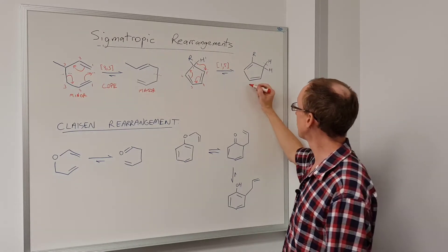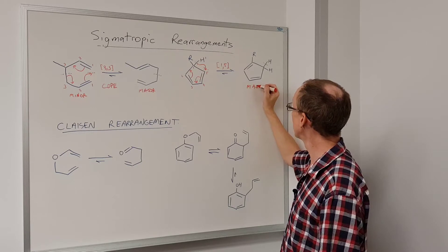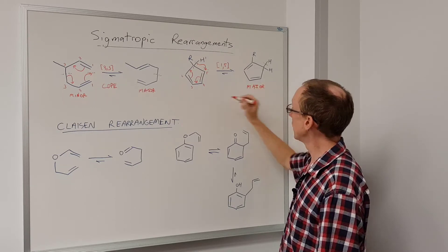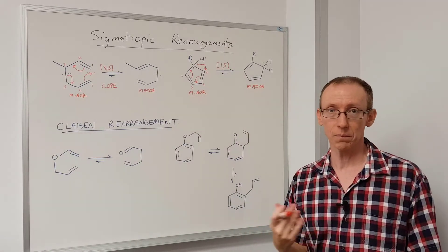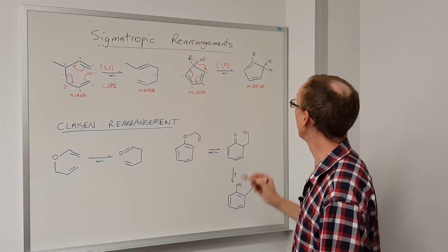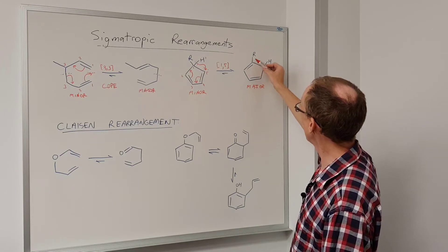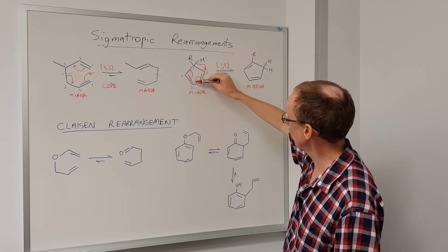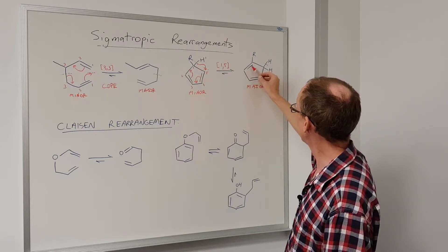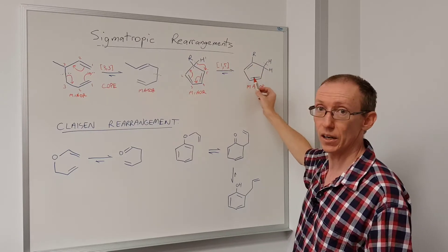Now where does the equilibrium lie for this compound and for this reaction? Once again it lies towards the right hand side, if we are assuming that the R group is some kind of alkyl group like a methyl group and so on, because here we've got a more highly substituted double bond than we have in this molecule. We've got two disubstituted, whereas here we've got a trisubstituted and a disubstituted.